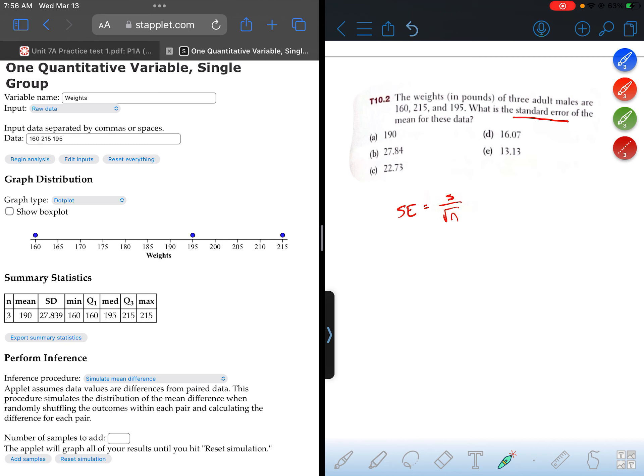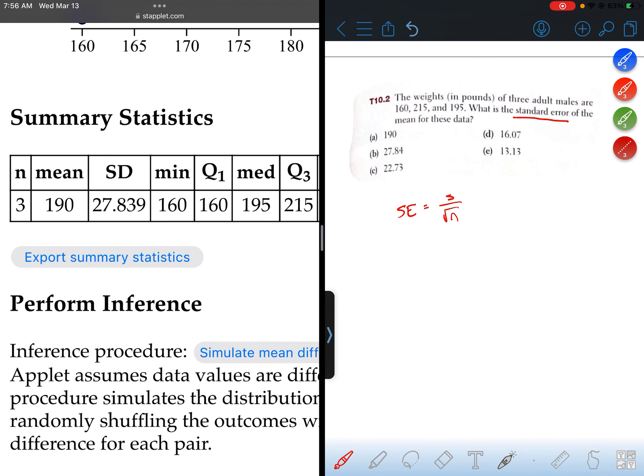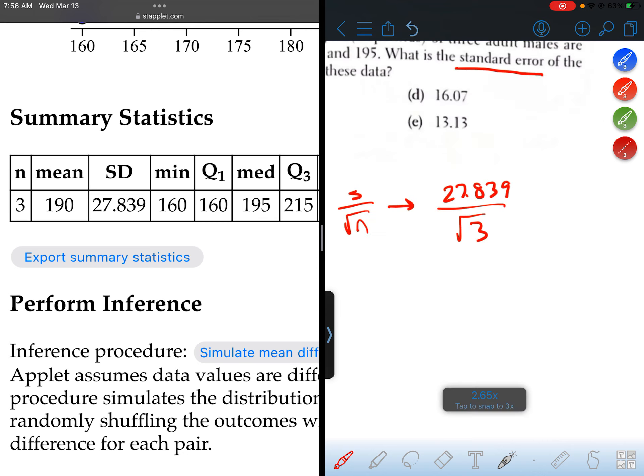So I've already entered in the three values into Staplet, and we have the standard deviation. So this is going to be 27.839 divided by the square root of 3.